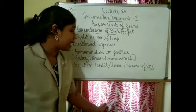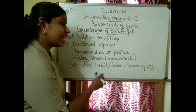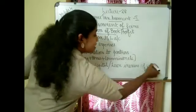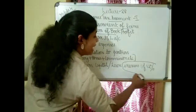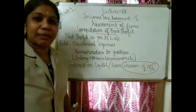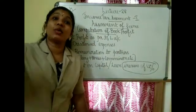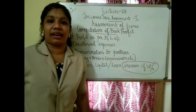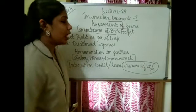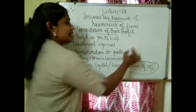The next item is interest on capital or interest on loan in excess of 12%. The 12% threshold is the allowable limit — anything beyond that must be added back.